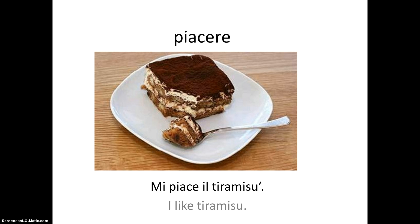However, there is no direct translation for 'to like' in Italian. Instead of liking things — an active gesture — Italians are pleased by things, a passive gesture. While English speakers like tiramisù, Italian speakers are pleased by tiramisù. Mi piace il tiramisù.